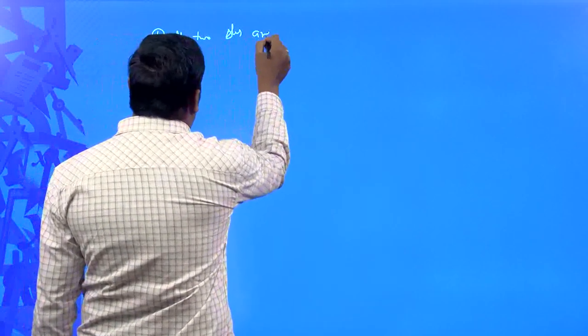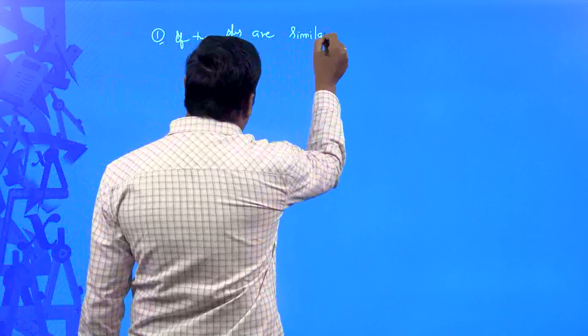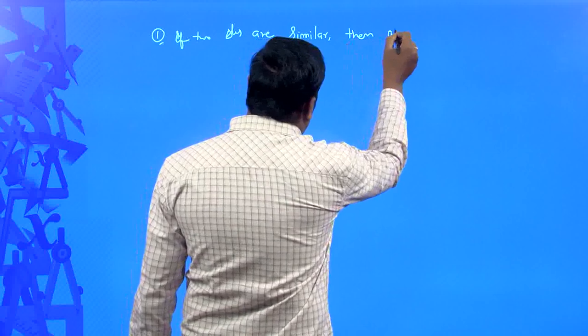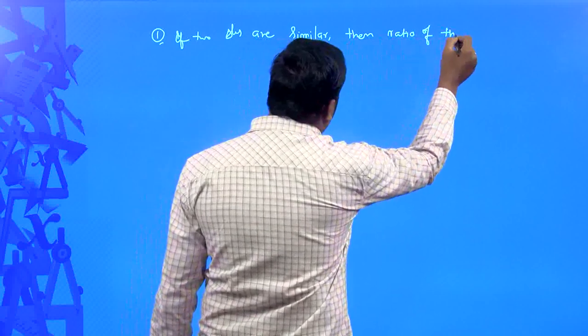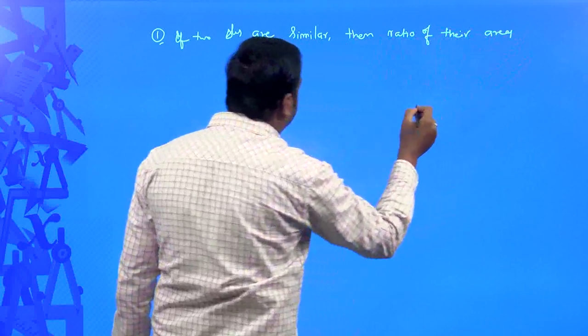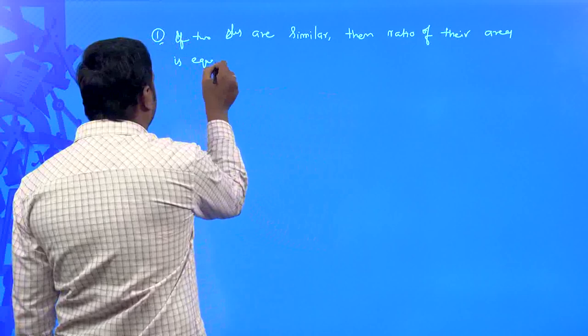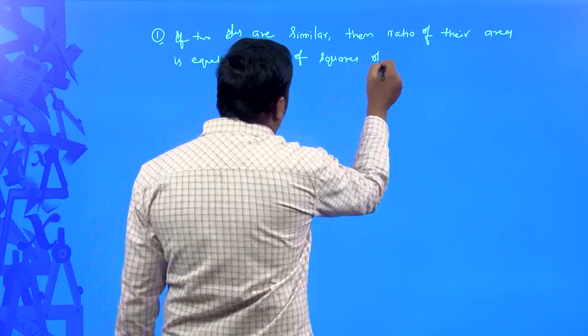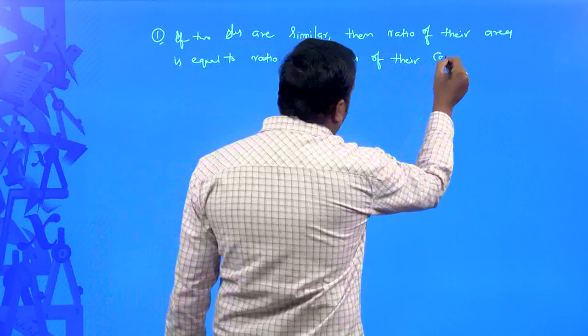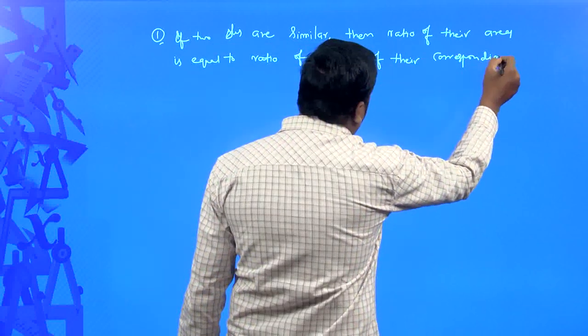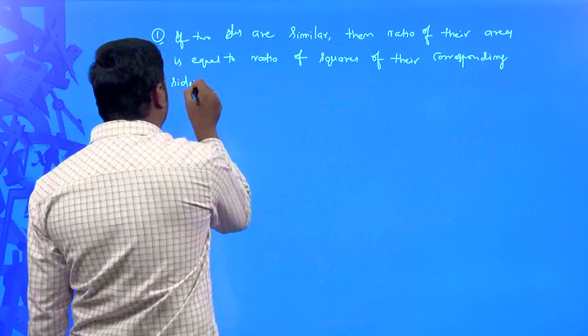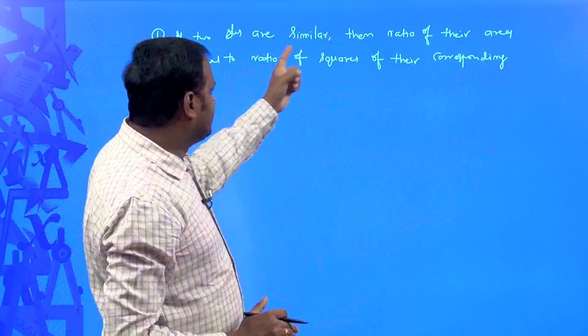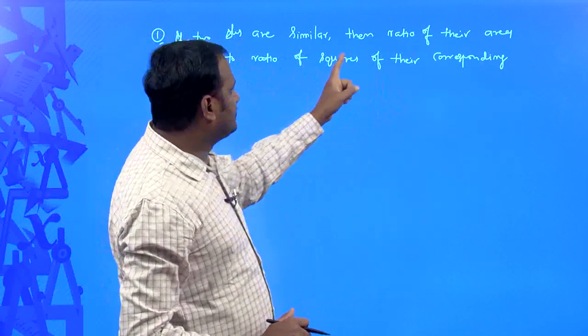The first statement we are going to prove: if two triangles are similar, then ratio of their areas is equal to ratio of squares of their corresponding sides.